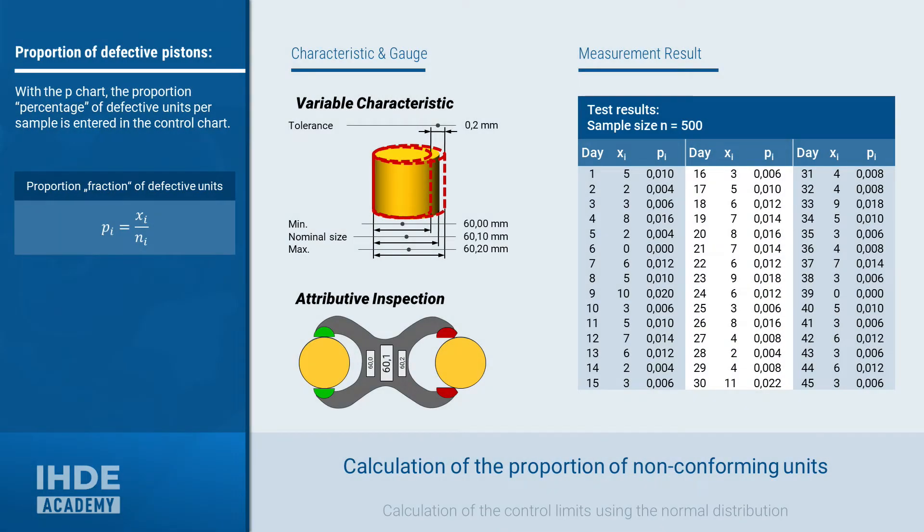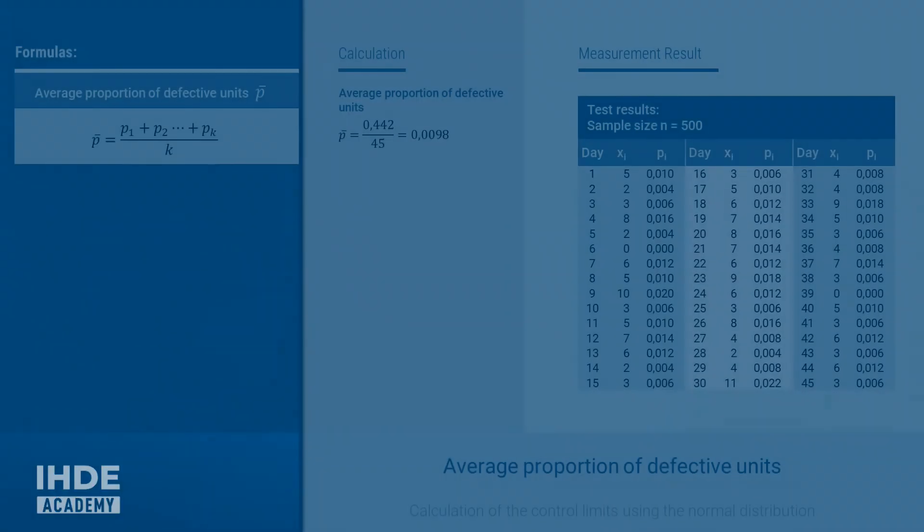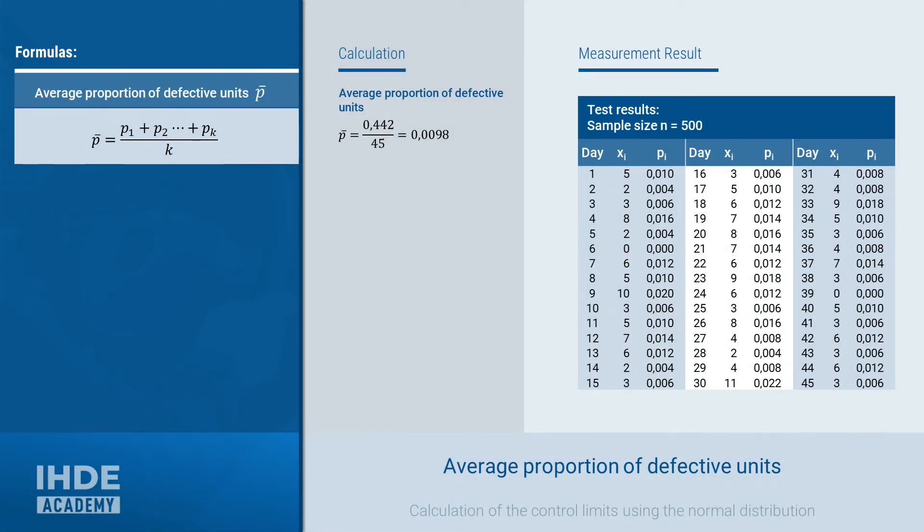The proportion of defective units is calculated from the quotient of the number of defective units and the sample size. This value was calculated for each sample and entered in the pi column in the table on the right. The average proportion of defective parts is required for the further calculation of the control limits. This is calculated from the sum of the individual proportions of each defective parts divided by the number of random samples. Thus, p bar is 0.0098. Translated, this means that approximately 1% of all parts in a sample do not meet the specifications.